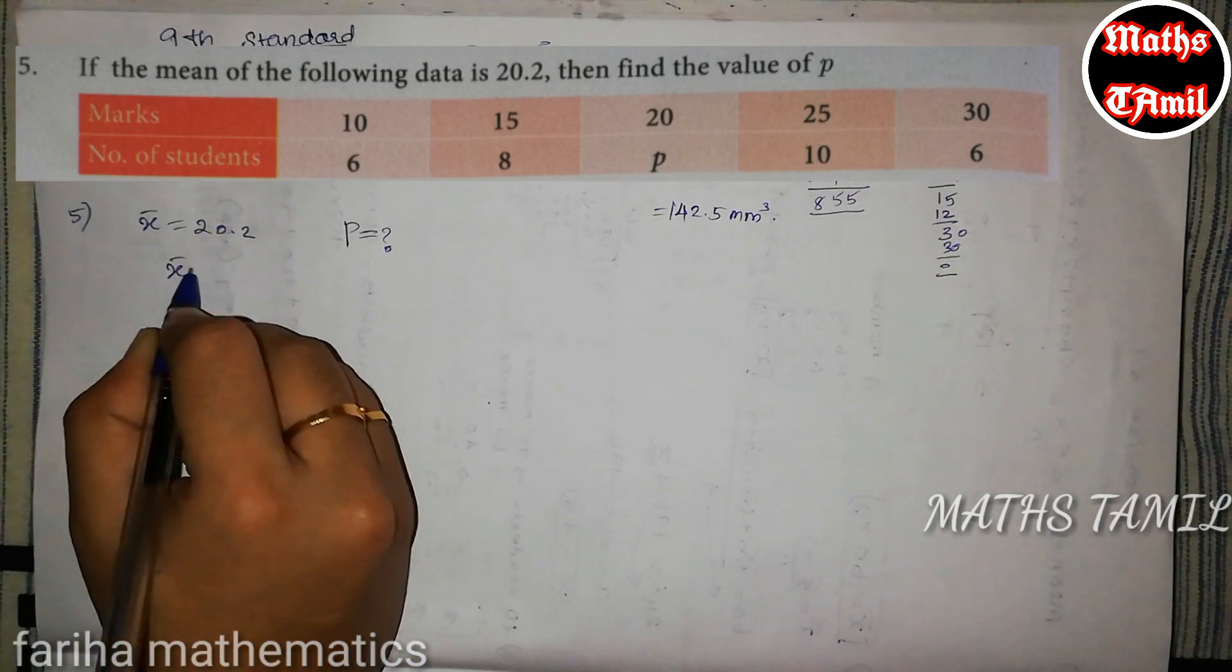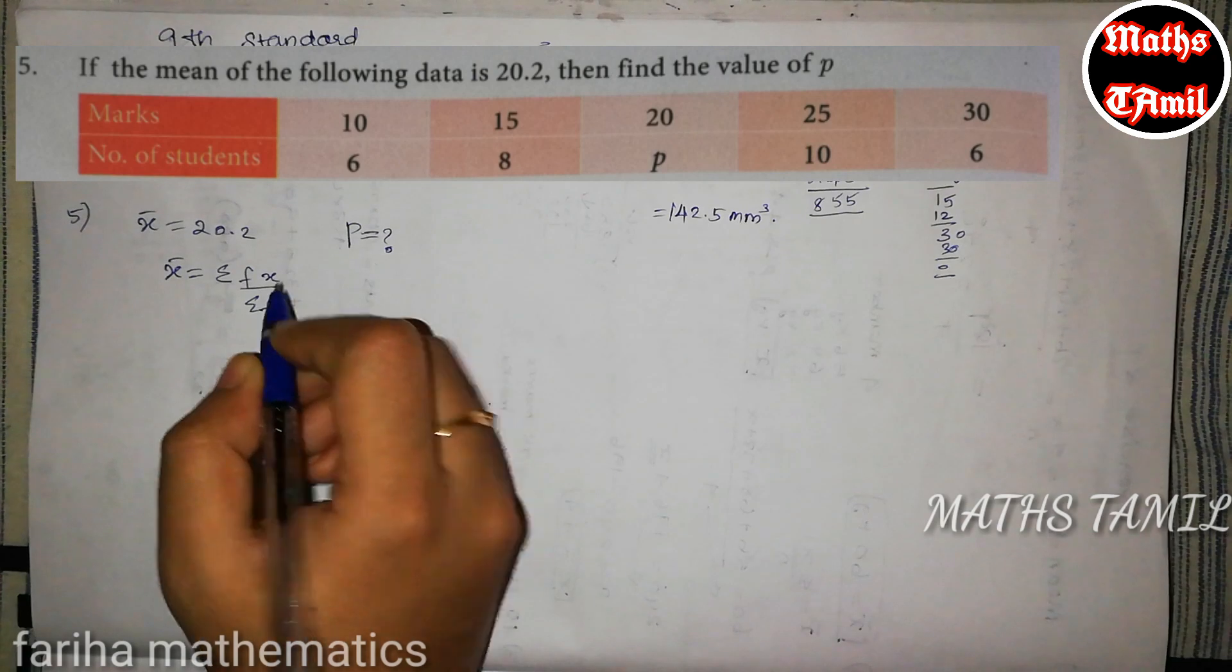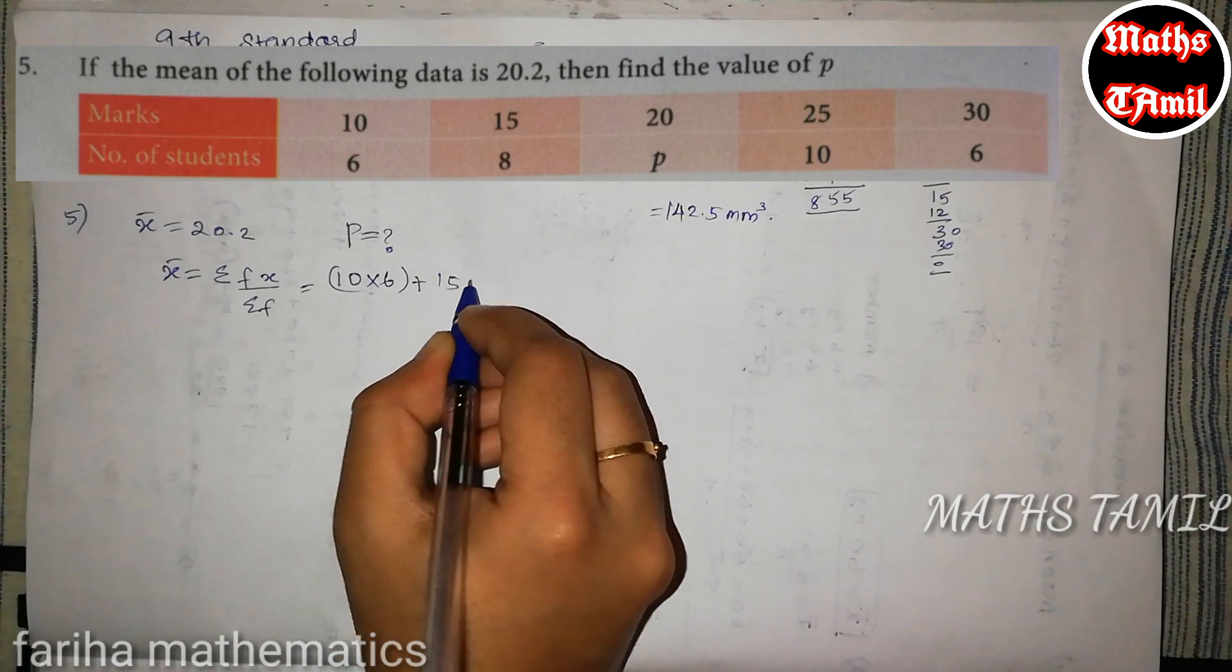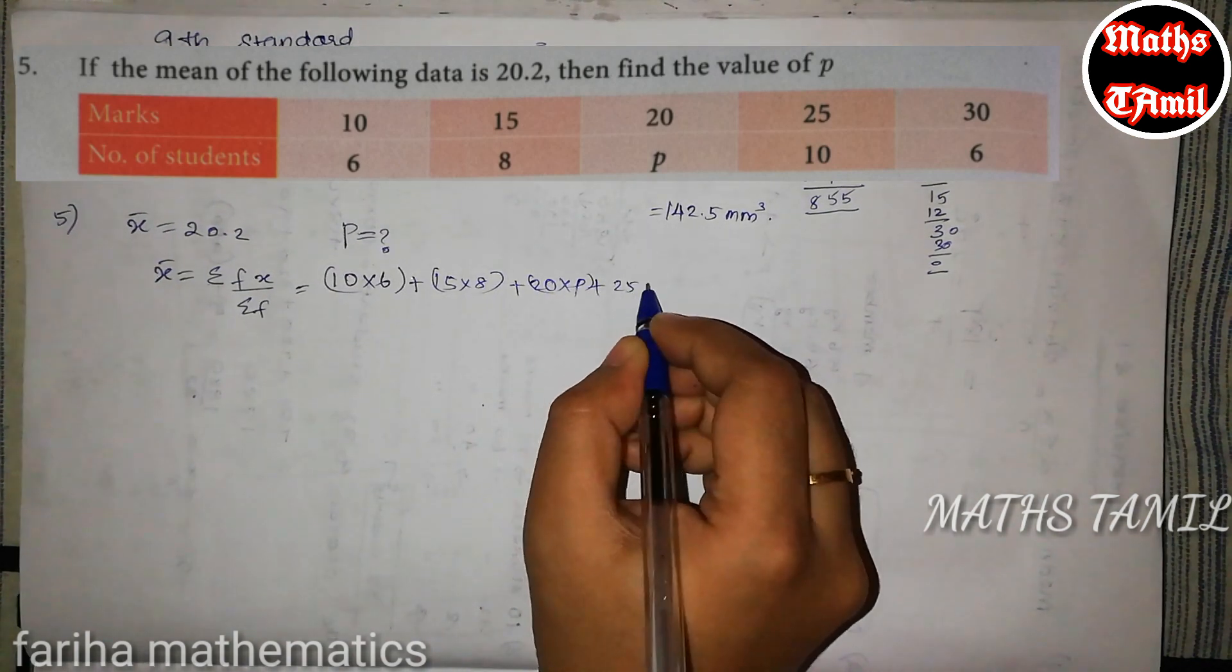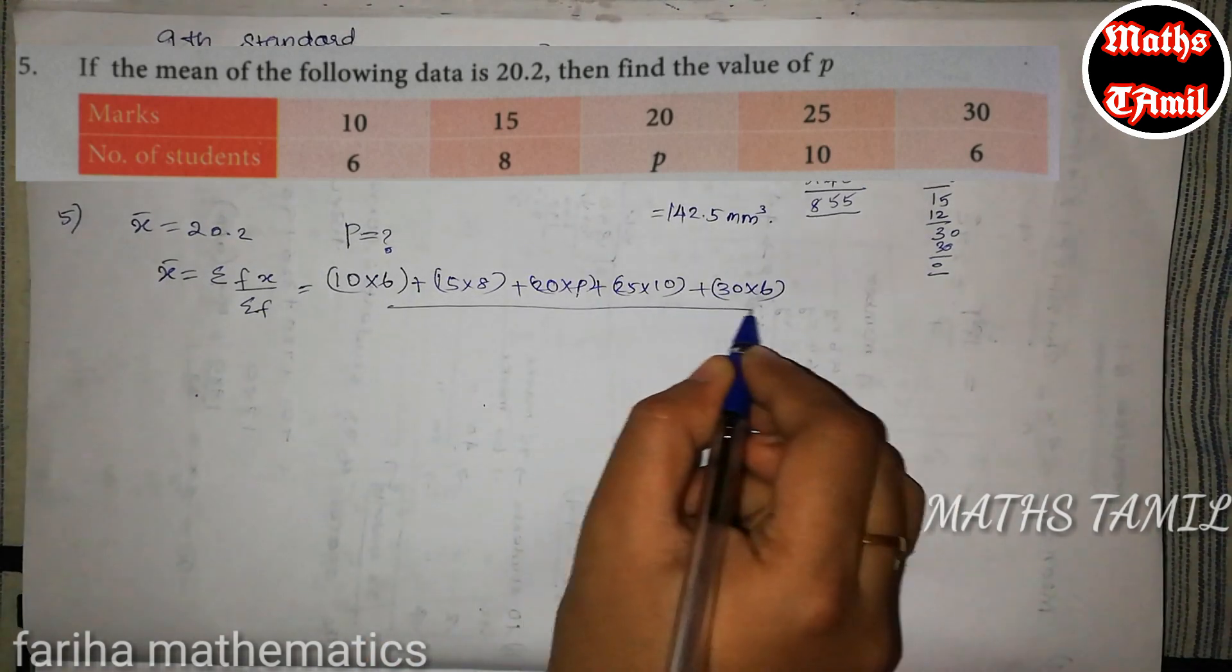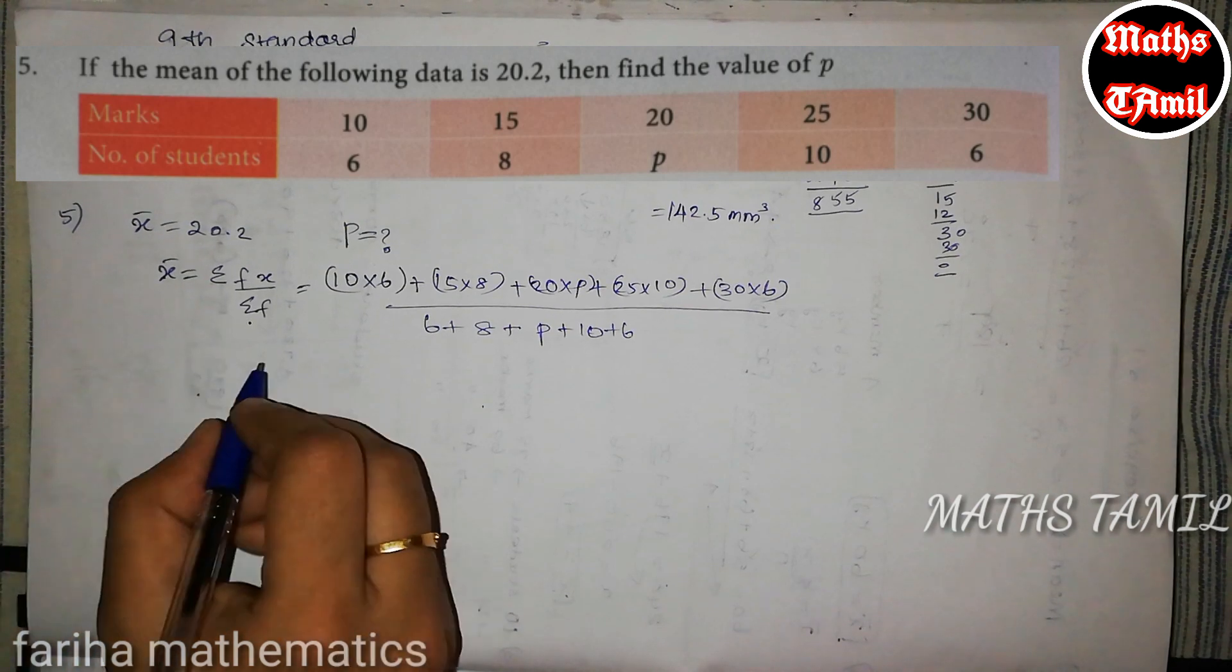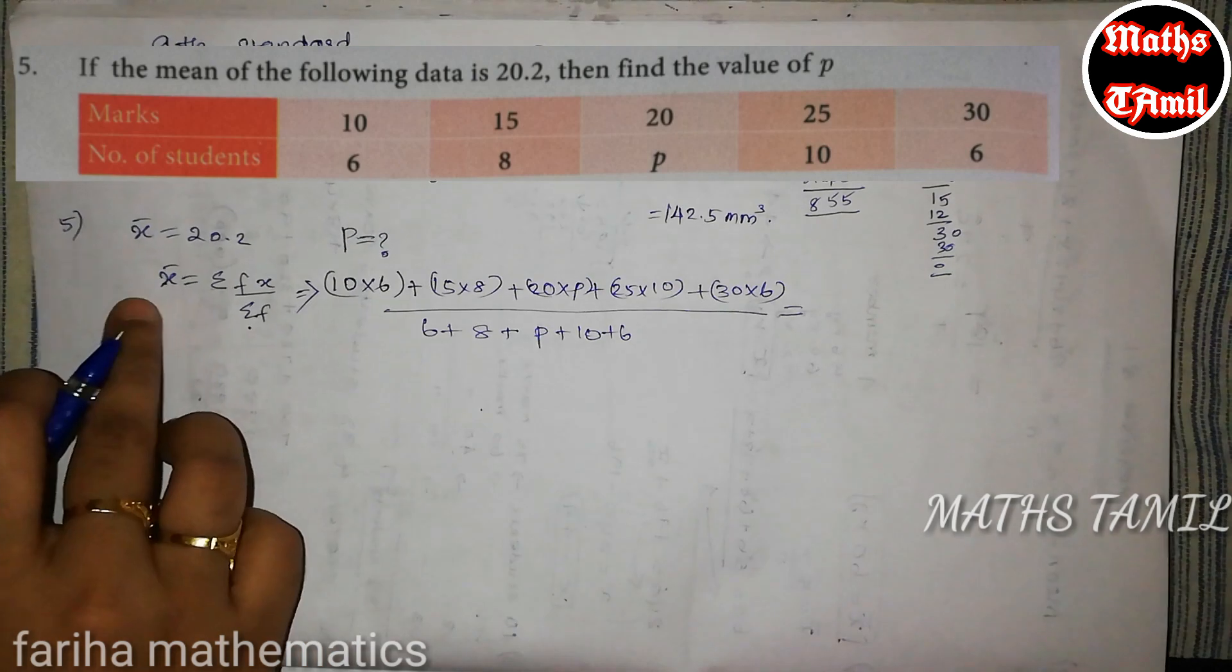So, summation f. So, in the formula use. So, summation f x, under two tables multiply. So, x bar value, that is equal to x bar value we apply.